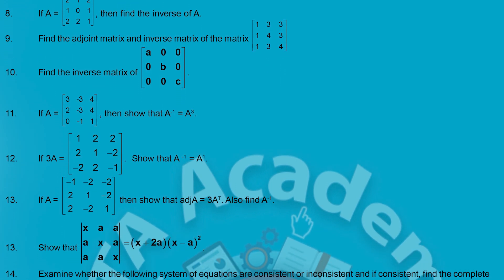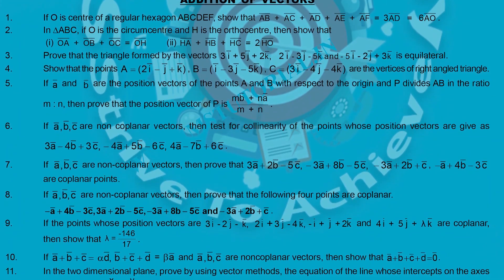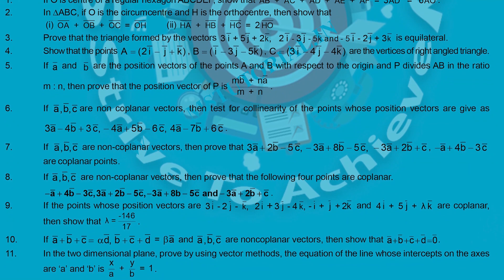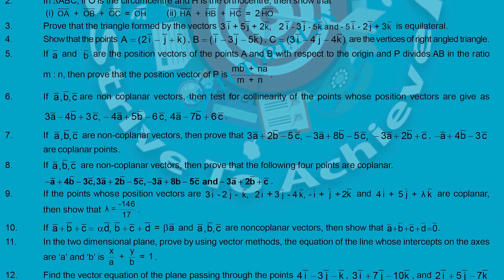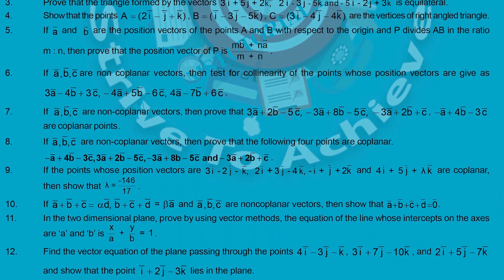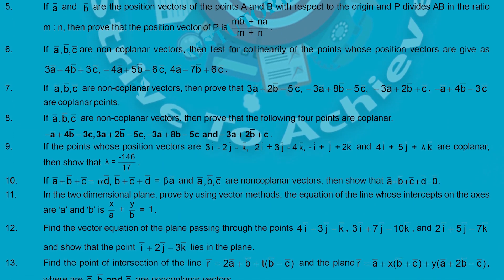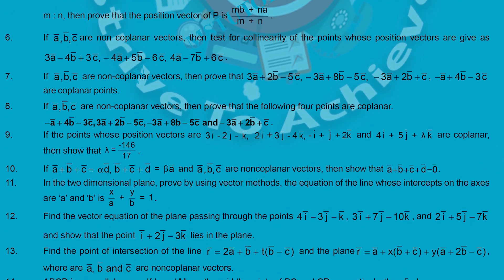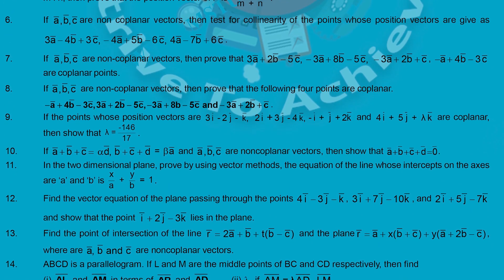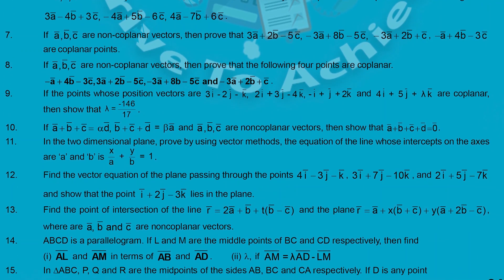The next chapter is Addition of Vectors. On this page I have given 15 SAQs for Addition of Vectors — these are very important. For example, regular hexagonal ABCDEF, and the next question is OA + OB + OC = OH. These are very very important questions. Practice each and every question to get 4 marks in Addition of Vectors.